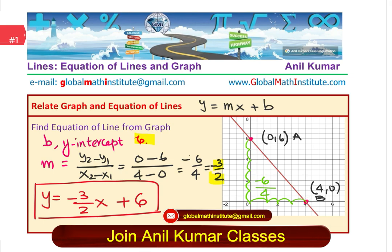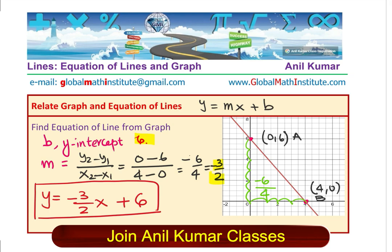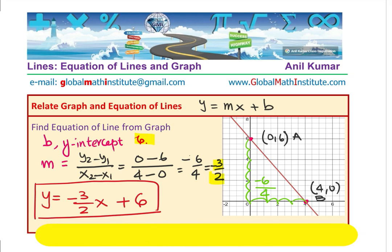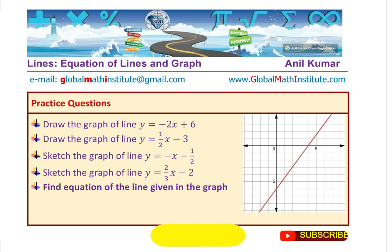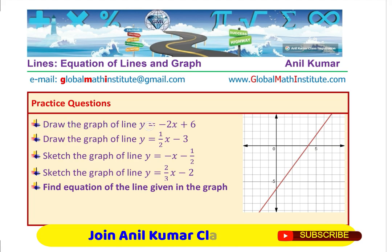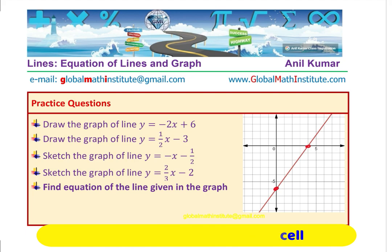With that, we come to the end of our lesson. We covered what drawing and sketching mean, how to use the slope-intercept form to plot or draw a line, and how to write a graph's equation. Here are practice questions: draw the line y equals minus 2x plus 6; draw the graph of y equals one-half x minus 3; sketch the graph of y equals minus x minus one-half; sketch the graph of y equals two-thirds x minus 2; and find the equation of the line from the given graph.